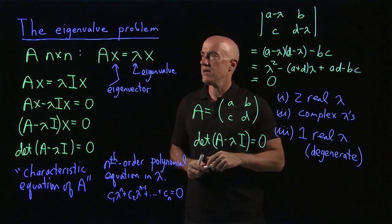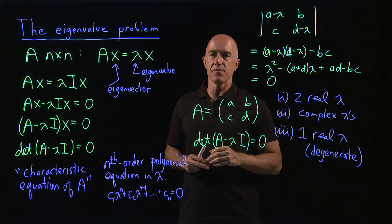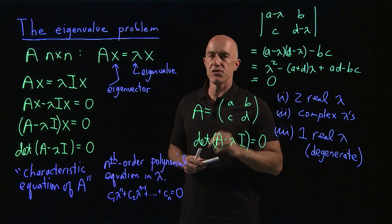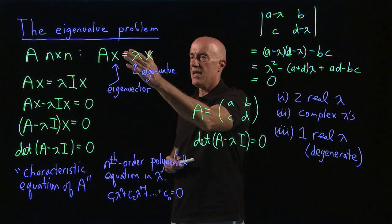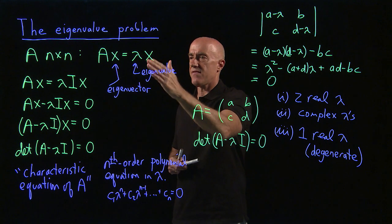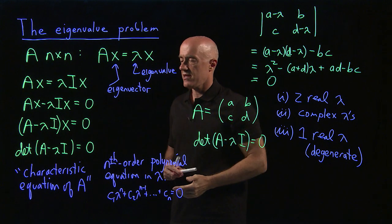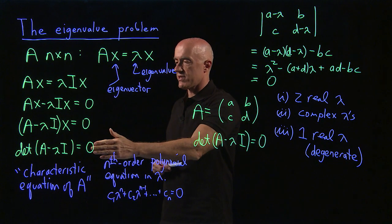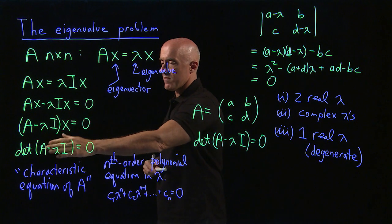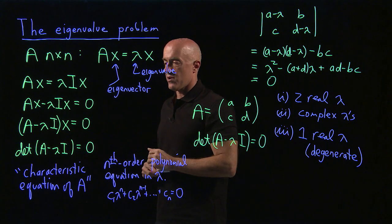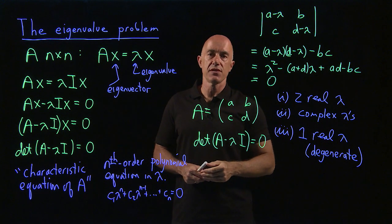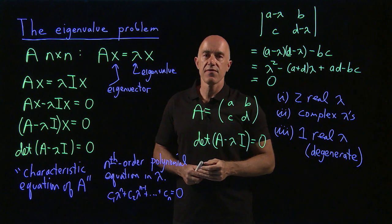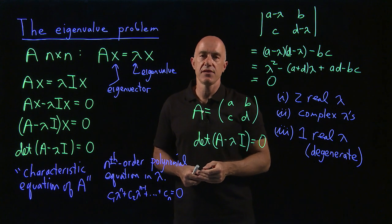To summarize: we considered the eigenvalue problem, a very important problem in science and engineering. We consider an n by n matrix and solve the equation AX equals lambda X for the eigenvalue lambda and the eigenvector X. That leads us to the characteristic equation of the matrix: determinant of A minus lambda I equals zero, which is an nth order polynomial equation for lambda. I worked the case when A is a 2 by 2 matrix. I'm Jeff Chasnov — thanks for watching, and I'll see you in the next video.